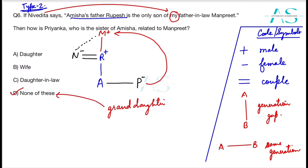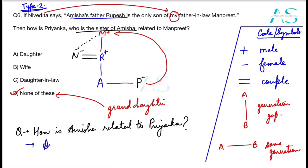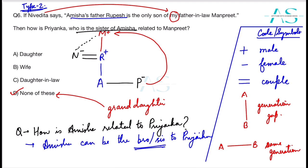Now suppose I ask: how is Amisha related to Priyanka? We know Priyanka is the sister of Amisha — that's given. But can we determine Amisha's gender? There is no gender symbol for Amisha. Amisha could be a brother or a sister to Priyanka. Going by the name's pronunciation — that would violate Rule 3. We should not judge gender from the name.